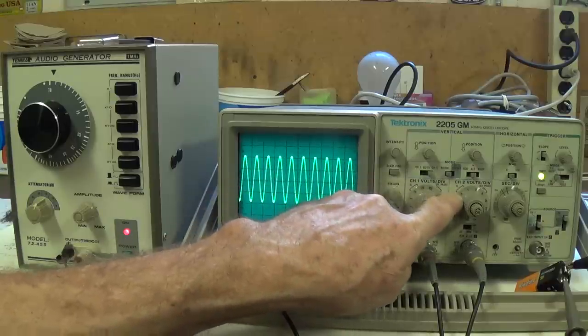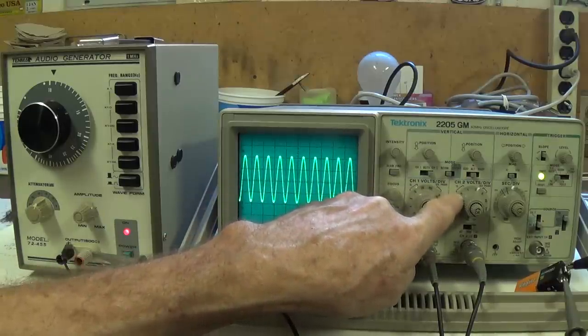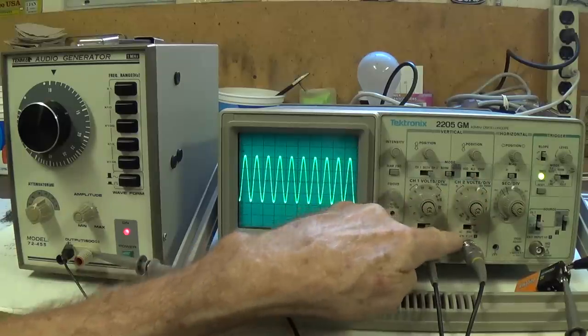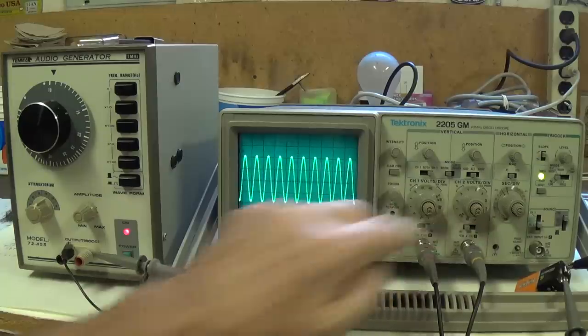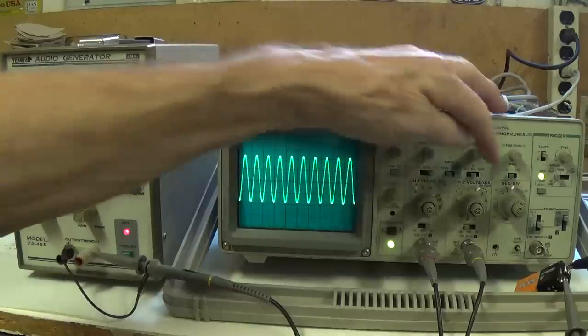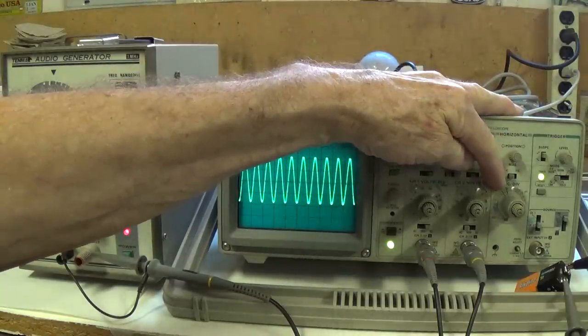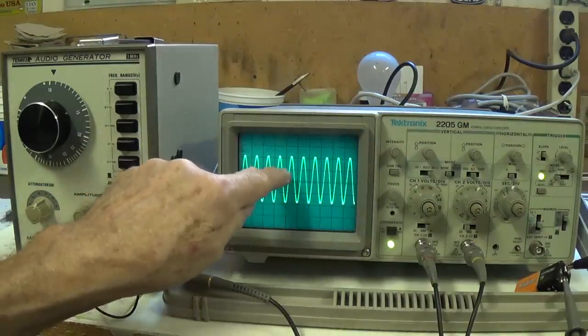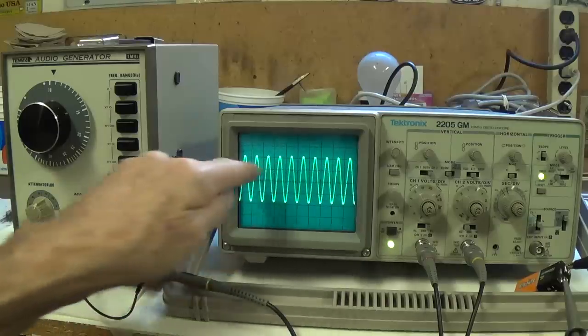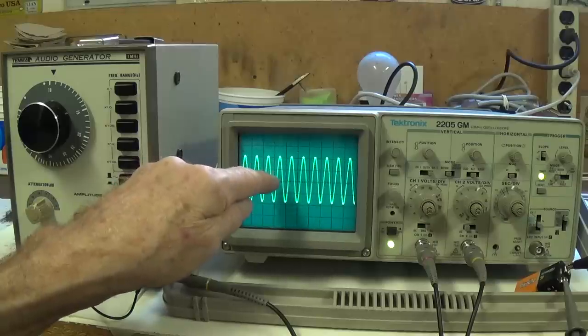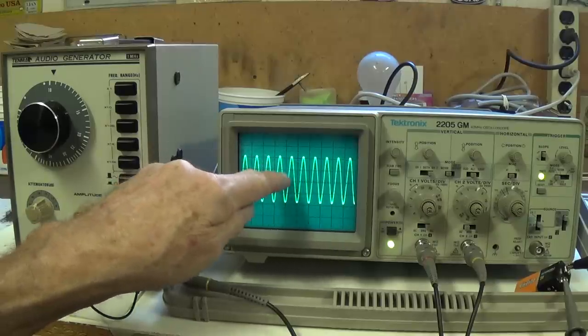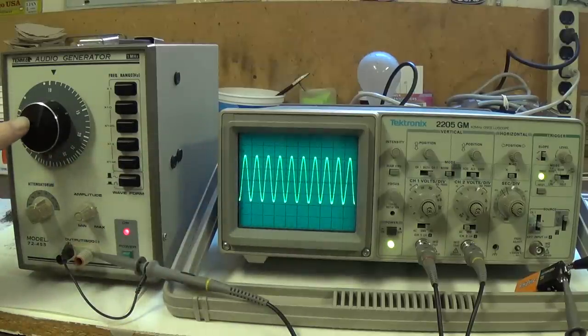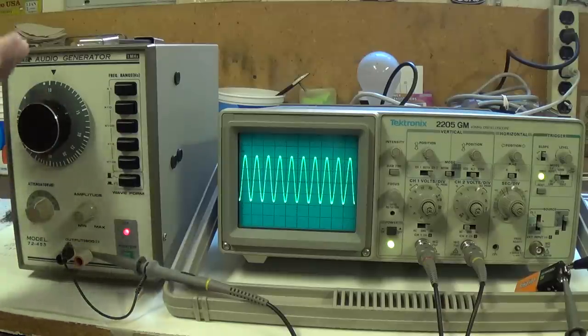My channel 2 volts per division are 0.5. I'm in ALT mode and down below here I am in AC mode, and the seconds per division setting is 1 millisecond per square. That way I have one complete waveform per square on the X axis, which since there are 1,000 milliseconds in a second, means there will be 1,000 waveforms in a full second. So this coincides to the 1,000 cycle per second output from my audio frequency generator.